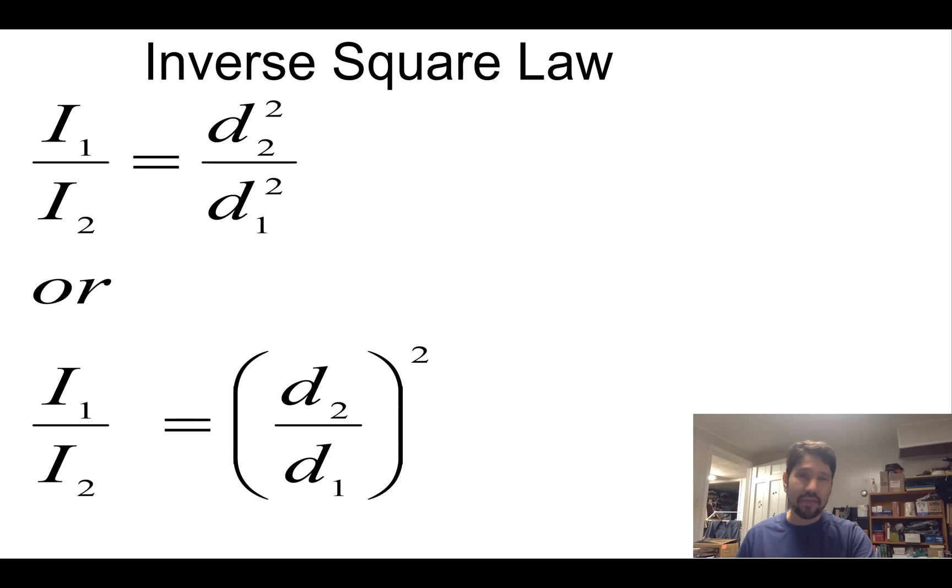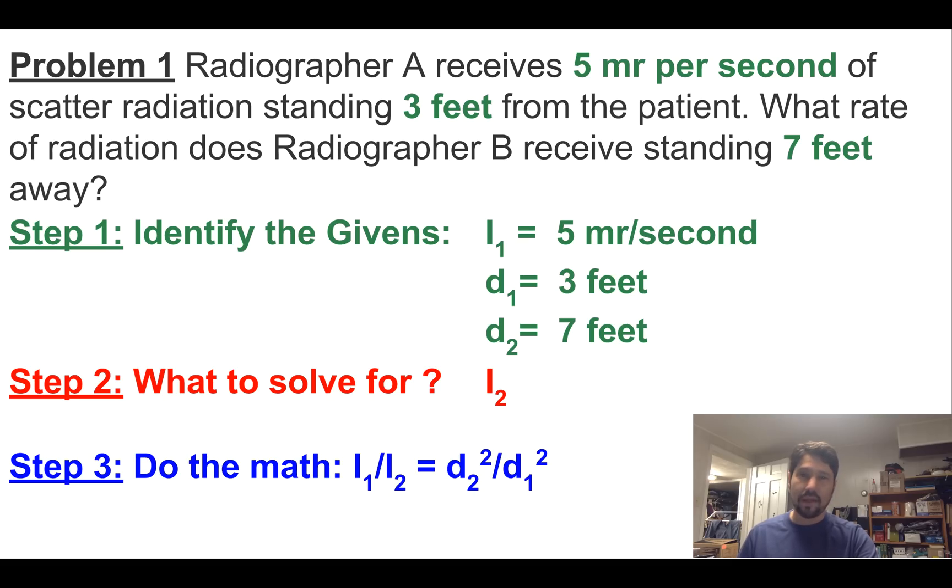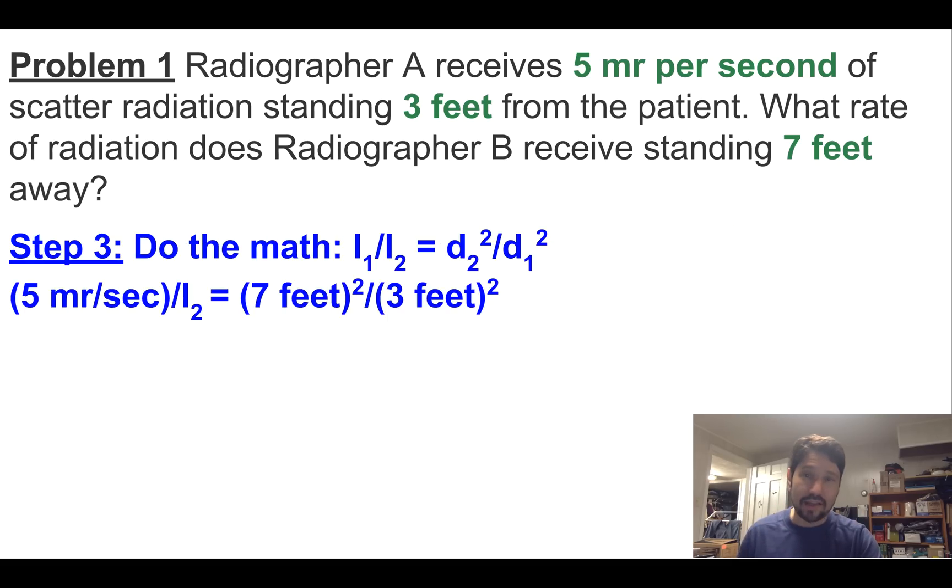All right, so to do the math, we dig out our formula, I1 over I2 equals D2 over D1 squared. And we start plugging and chugging. So I1 is five millirads a second. That divided by I2 is going to equal D2, which is seven feet squared over D1, three feet squared.